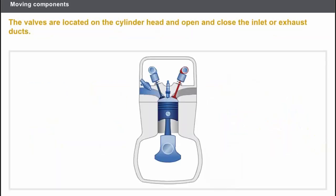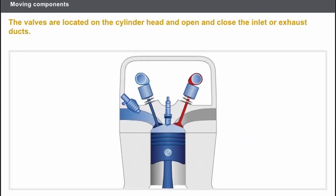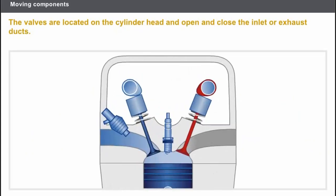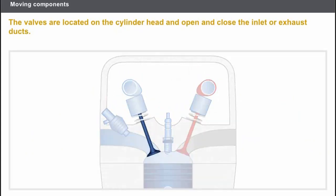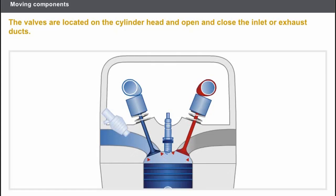The valves are located on the cylinder head and open and close the inlet or exhaust ducts. There are two types of valve: inlet valves, which allow the gases to enter the cylinder, and exhaust valves, which control the evacuation of the burnt gases. The spring keeps the valve on its seat when there is no force from the camshaft, and the seal between the valve and its seat must be perfect.